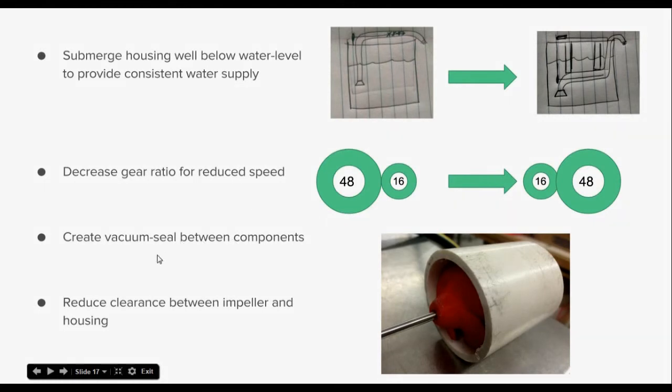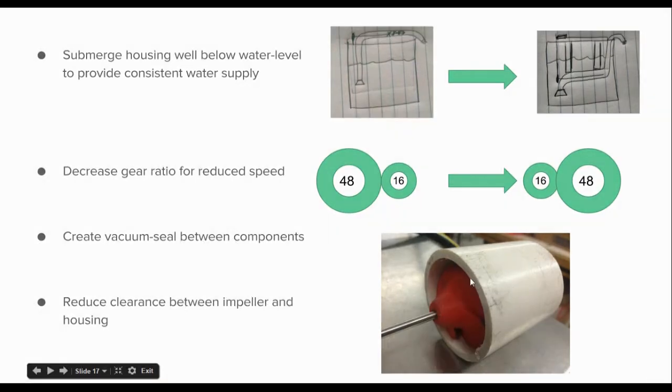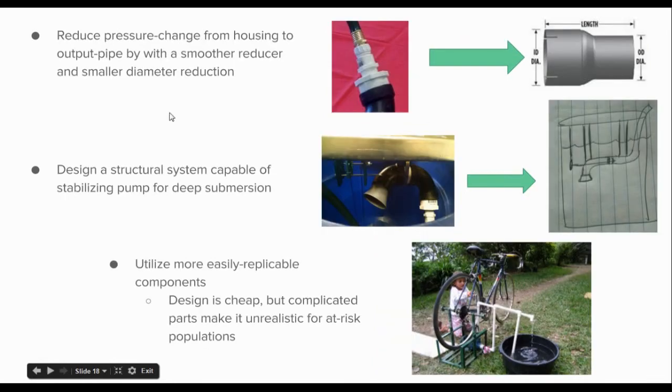Vacuum seal between the components, perhaps reduce clearance between the impeller and the housing. There wasn't a lot of clearance there, but we did have to file down the edges, and so we got probably about 0.1 inches, and it was variable, which is not ideal. Reducing the pressure change from the housing to the output pipe with a smoother reducer, we had a setup with a lot of sharp angles in there. And a smaller diameter reduction instead of this 2 inches to 1 inch, we could go from maybe 2 inches to 1.5.